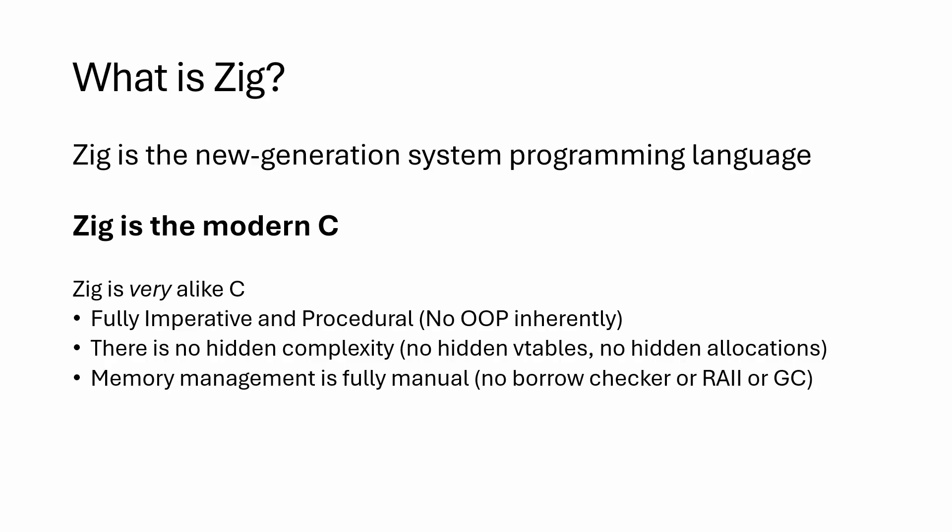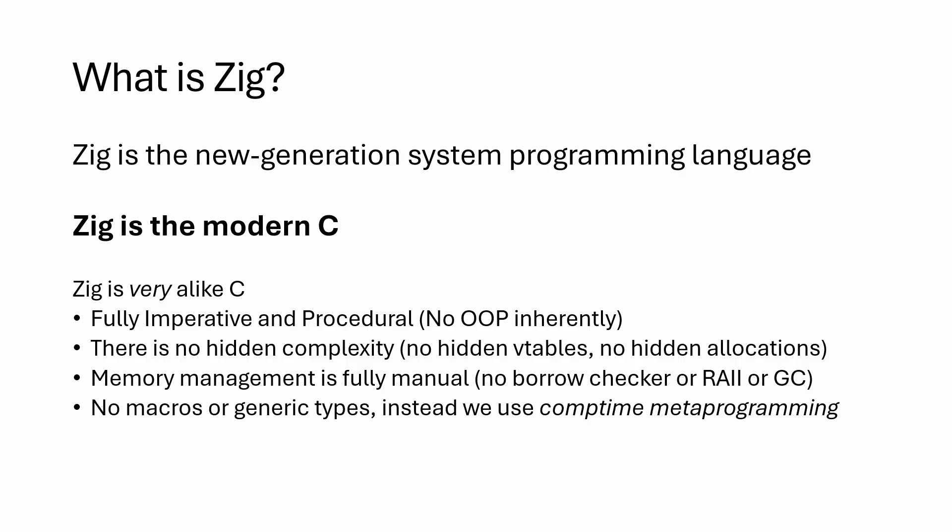The memory management of Zig is fully manual — there is no borrow checker like in Rust, no resource acquisition is initialization like in C++, or garbage collection like in Go. It has no macros or generic types; instead we use a feature called comp-time metaprogramming, which I believe is a much better alternative than those two.